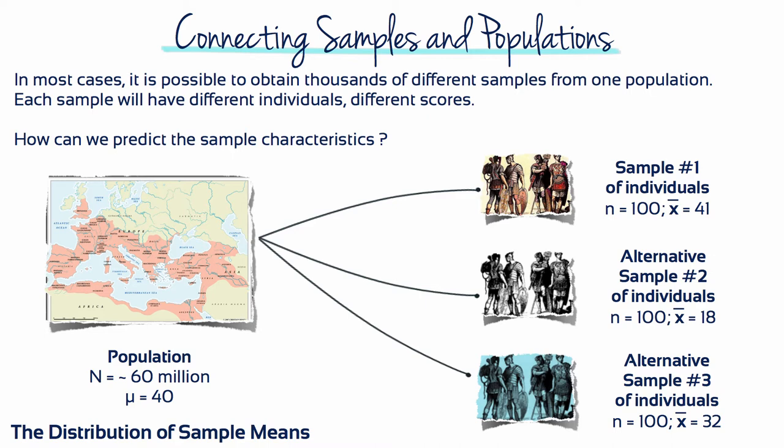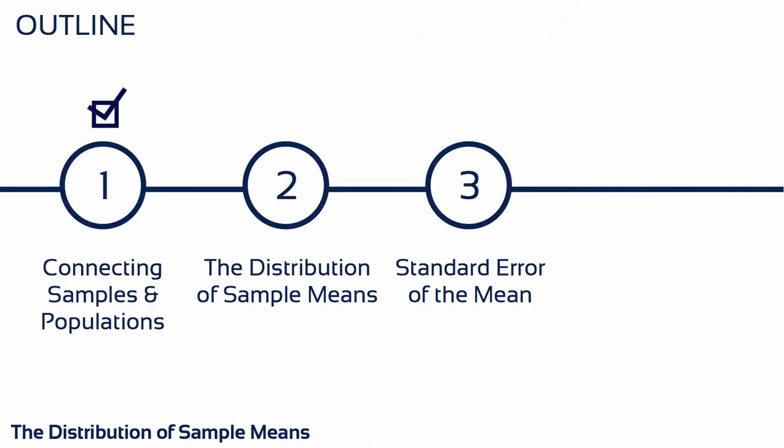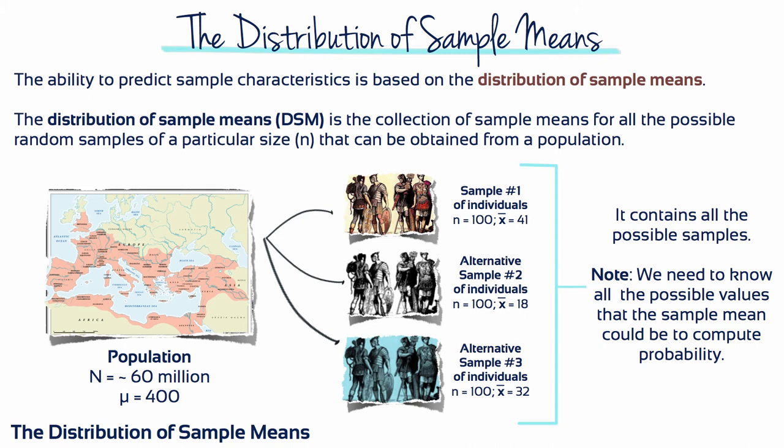Additionally, although it's intuitively reasonable that sample size is an important factor in determining how accurately a sample represents its population, we need to quantify exactly how sample size influences the probabilities. In general, the difficulty of working with samples is that a sample provides an incomplete picture of the population.